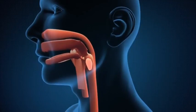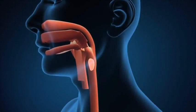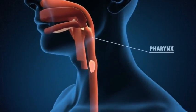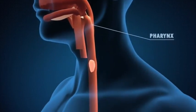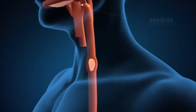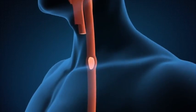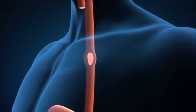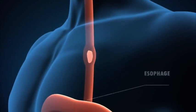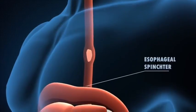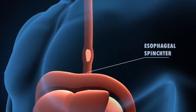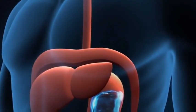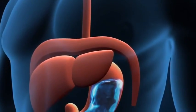The softened food is rolled into a bolus and pushed by the tongue into the throat. Movement of the food occurs due to a wave-like contraction known as peristalsis. A sphincter known as the lower esophageal sphincter relaxes and the food enters the stomach.